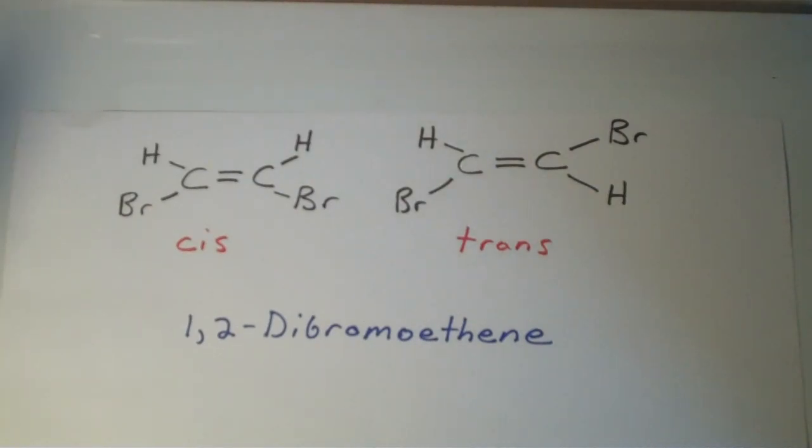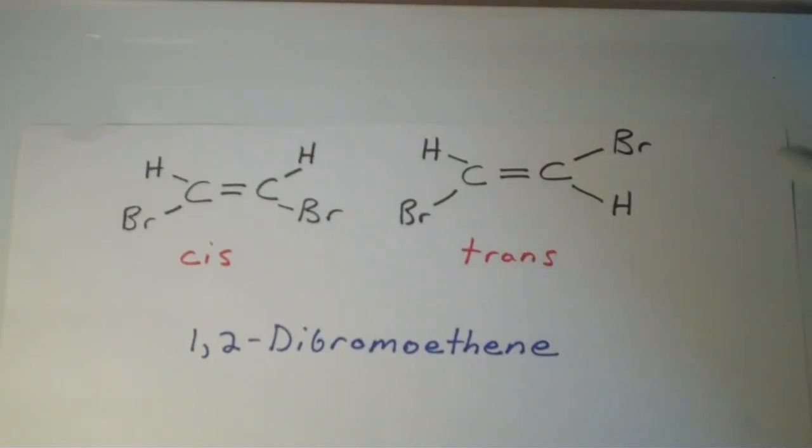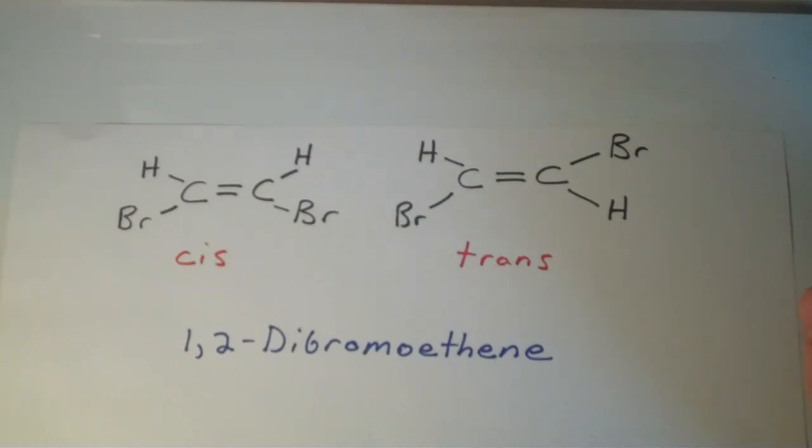The take-home lesson here is that that pi bond is a sideways overlap. You can't rotate around it. And as a result, atoms can be on the same side of the pi bond, or they can be on opposite sides of the pi bond, resulting in cis or trans isomers, respectively.